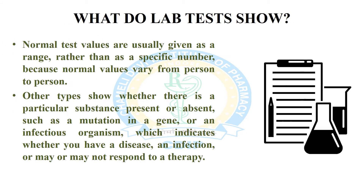What do lab tests show? Some types of lab tests show whether or not your results fall within normal ranges. Normal test values are usually given as a range rather than a specific number, because normal values vary from person to person — what is normal for one person may not be normal for another. Other types show whether a particular substance is present or absent, such as a mutation in a gene or an infectious organism, which indicates whether you have a disease, an infection, or may or may not respond to a therapy.